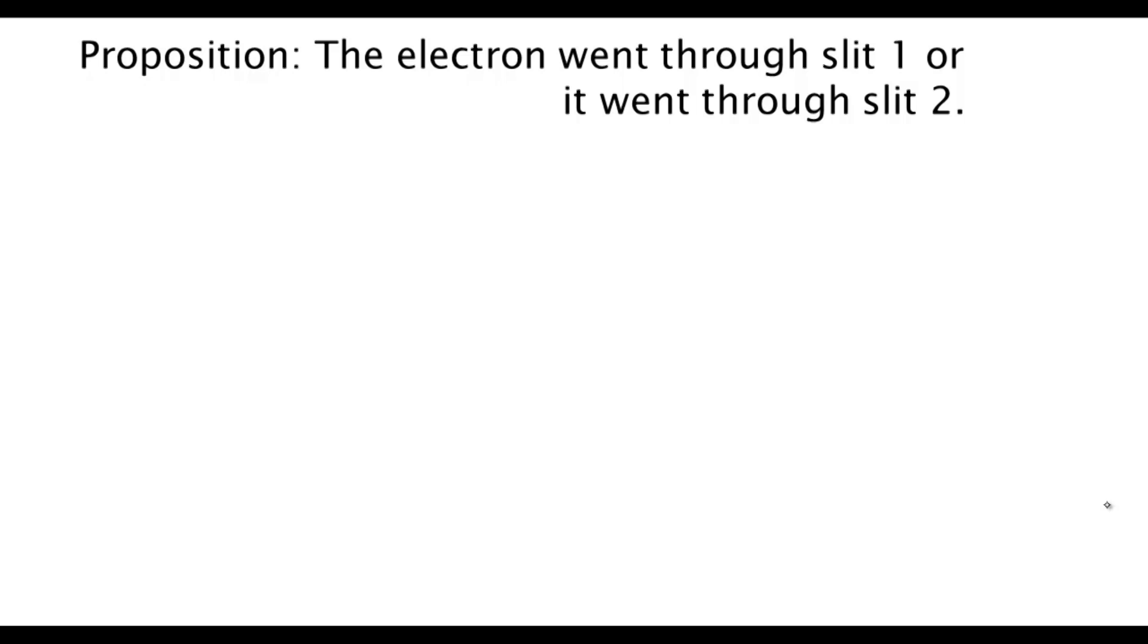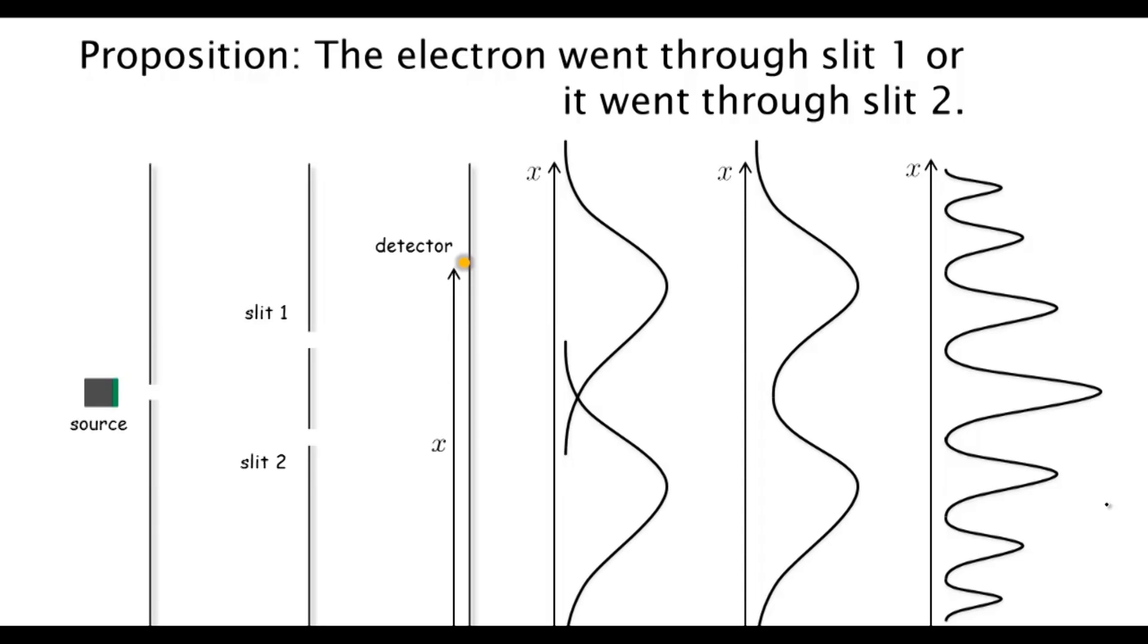This proposition says: the electron either went through slit 1 or it went through slit 2. If it arrived at X, it started from the source, it must have taken this path or that path. Obviously, if that were the case, we should not have seen the interference pattern. This proposition is obviously false, but let's investigate it further by designing an experiment.